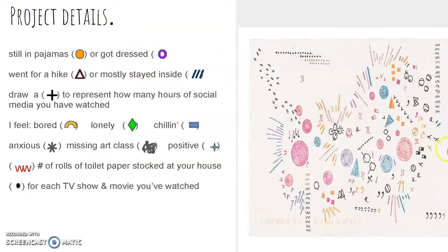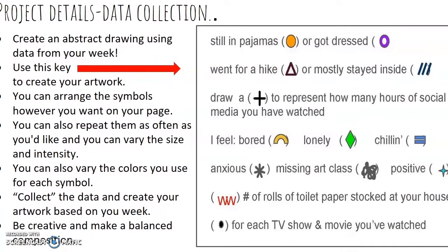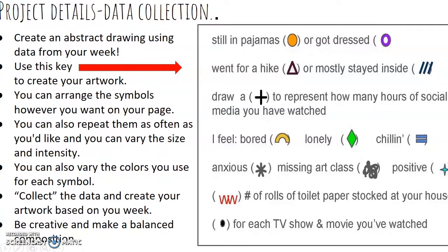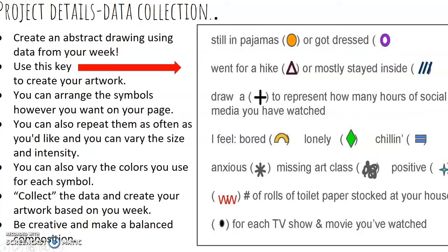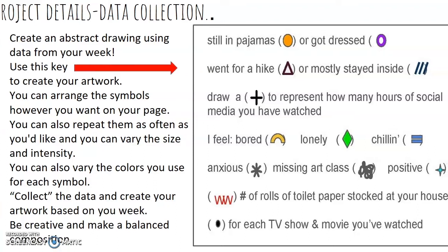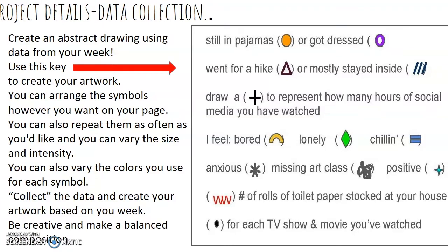Here's some more information about your actual project. For the project details and data collection, remember you're collecting data to create this artwork. Create an abstract drawing using your data from your week. Use this key — here's the key we'll be using to create the data. You can also create your own keys. For example, you could create a minus sign for the hours you spent playing a video game, or an arrow or less than or greater than sign for the hours spent on social media, which includes TikTok. So you're going to be creating artwork based on data that you are collecting from your week.